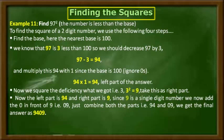Since 9 is a single-digit number and the number of zeros in the base are 2, the number of digits in the right part and the number of zeros in the base are not equal. So, in order to make them equal, I am going to place a 0 in front of the right part, giving 09. Now by combining both parts — 94 and 09 — I get the final answer as 9409. Therefore, 97 squared is equal to 9409.